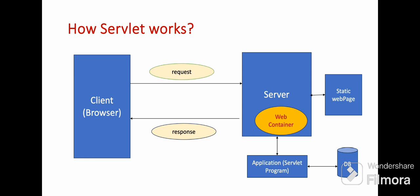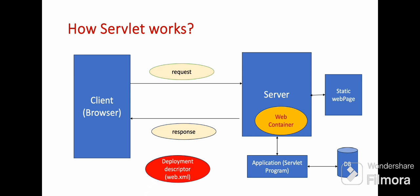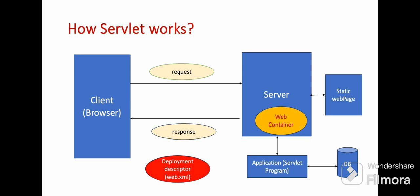Now one question arises: how will the server know what the client is requesting? For that, we have something called a deployment descriptor, that is web.xml, a normal XML file. In that we have something called mappings — for which request which servlet should be called. We will understand more about web.xml in the next slide. This is how the servlet will work.